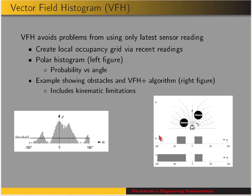Once we have this histogram and determine where the objects are, we need to make a decision on which direction to go. The VFH plus algorithm also includes kinematic limitations. For example, in a given situation the vector field histogram would give you obstacles in certain directions, but VFH plus would also include the fact that the robot at its current speed and parameters couldn't make a particular turn — so those directions are blocked off too.